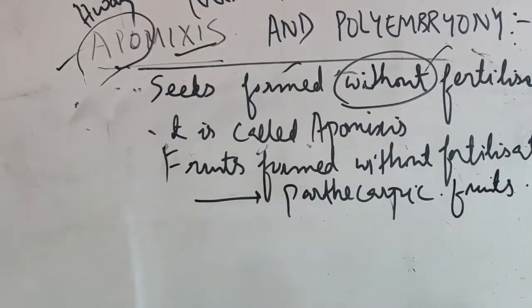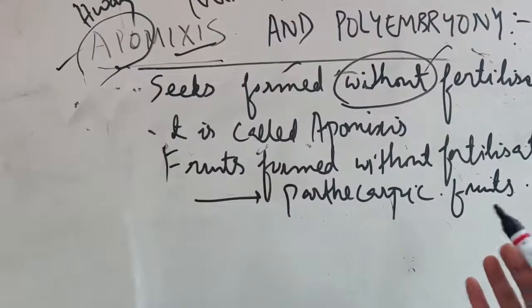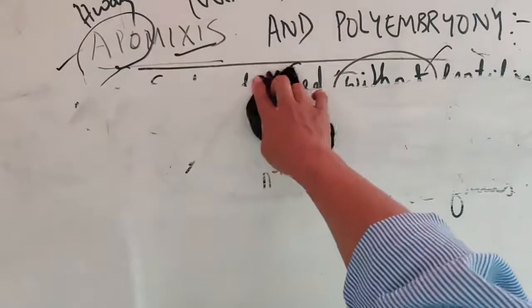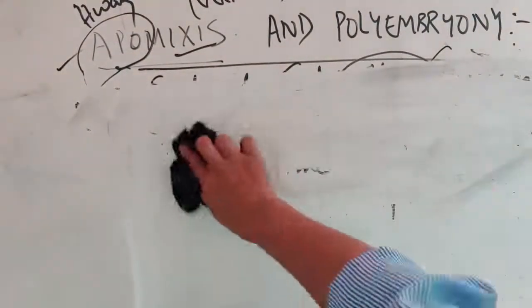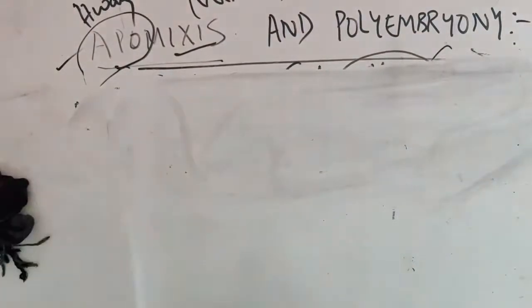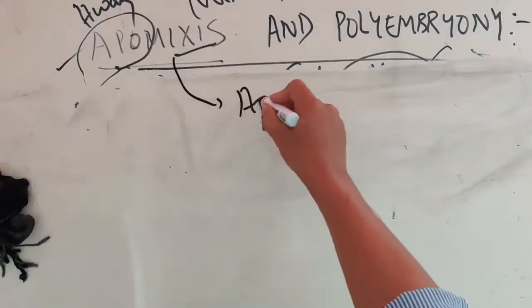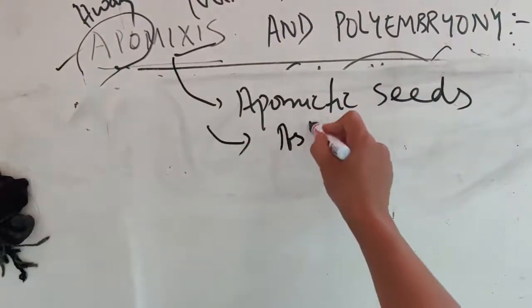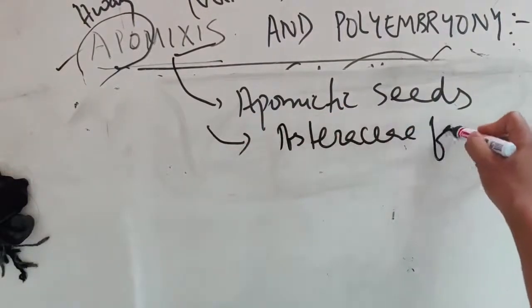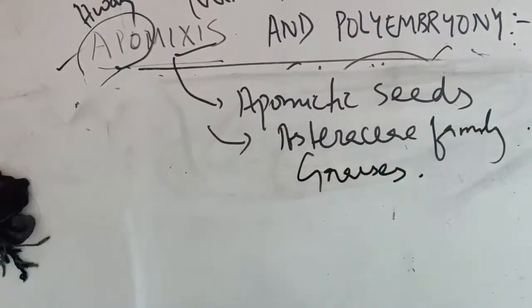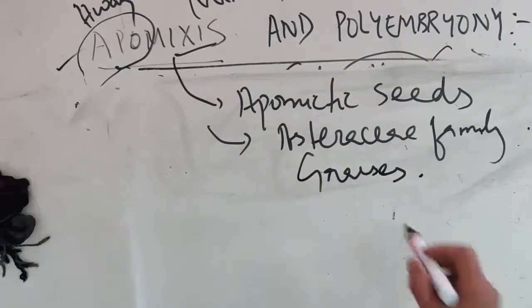Apomixis avoids meiosis, division, and fusion — the seeds are formed without these processes. It is mostly found in the Asteraceae family, that is the sunflower family, and also in grasses. It is very common in these families. The seeds formed this way are known as apomictic seeds.